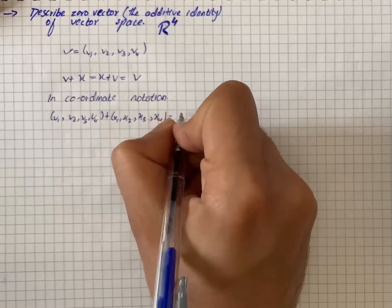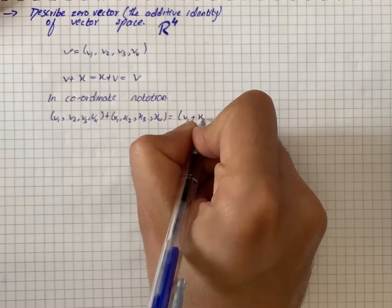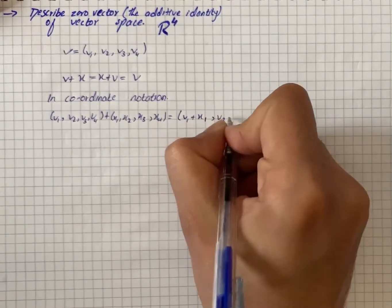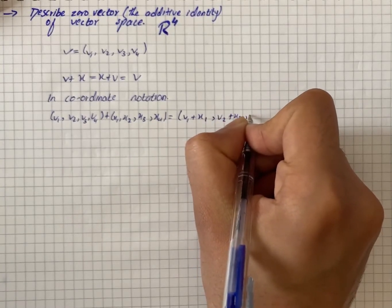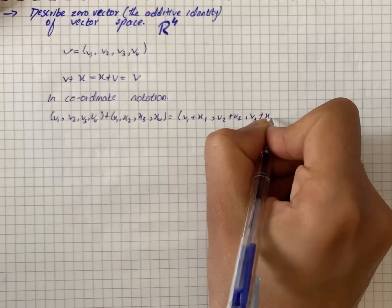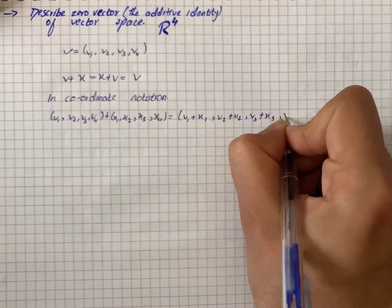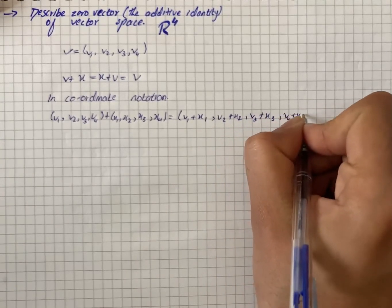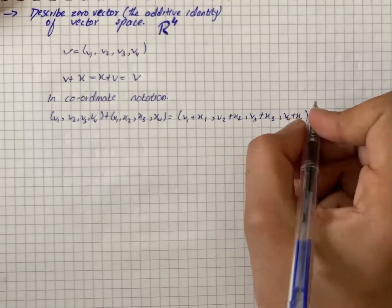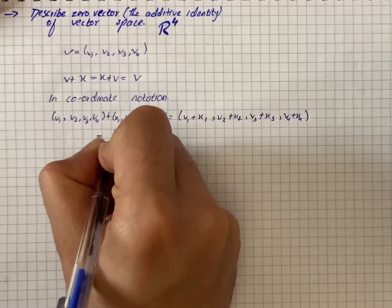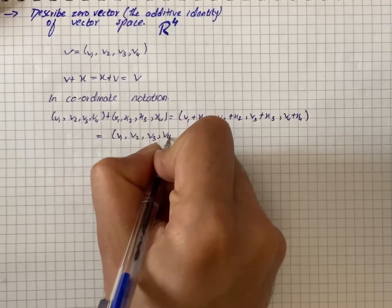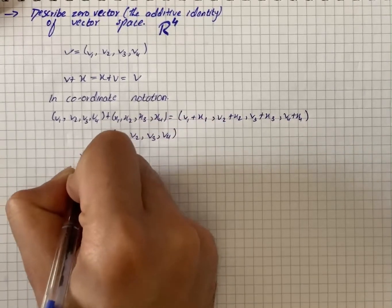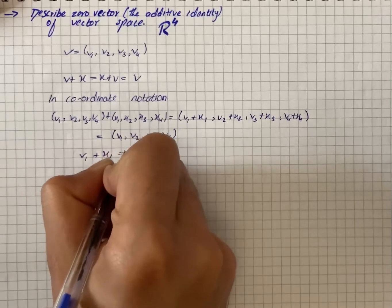That is equal to (V1 plus X1, V2 plus X2, V3 plus X3, V4 plus X4). It will eventually equal (V1, V2, V3, V4), so we have V1 plus X1 equals V1.